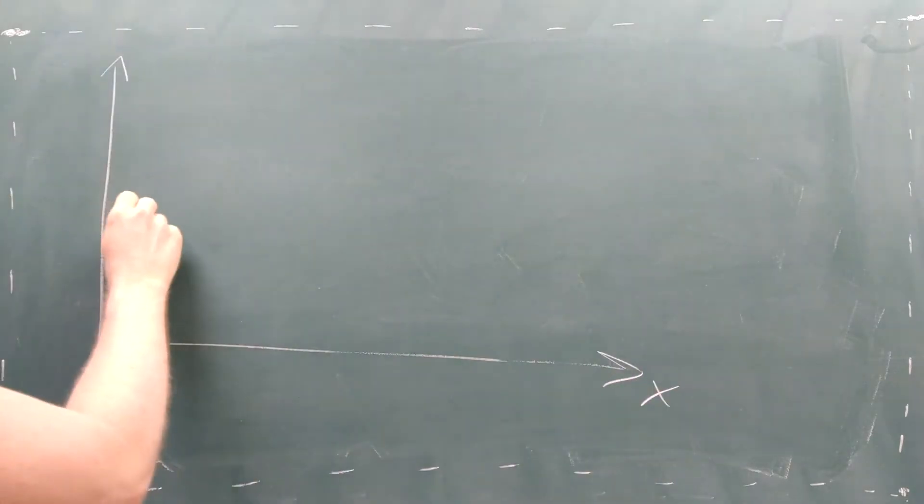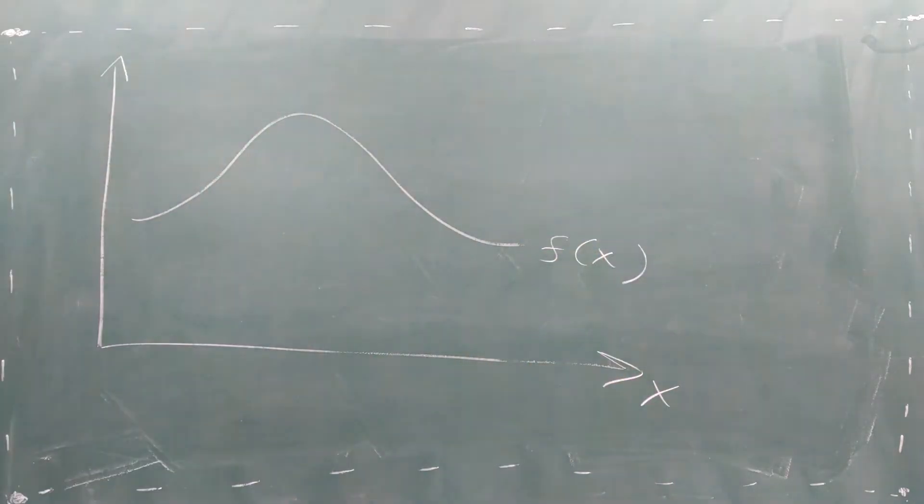Numerical integration relies on taking your function of interest and dividing it into pieces. For a function of one independent variable, these pieces are one-dimensional strips along a single axis.